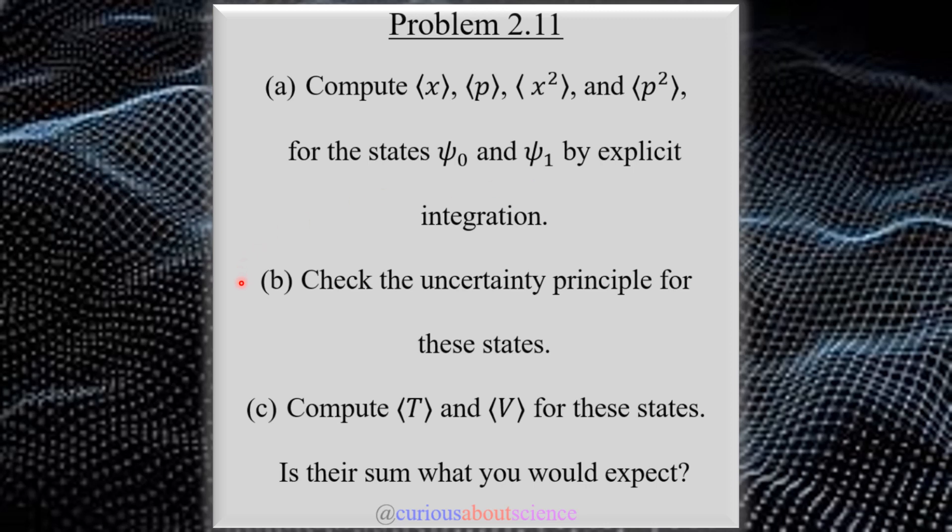Part B: check the uncertainty principle for these states. Makes sense, we already calculated the expectations. Let's find the standard deviation. And then part C, compute the expectation value of T and V for these states. Is there something you would expect? Here, the expectation of T is the expectation of kinetic energy, which we know we can write in terms of momentum. And V as well, you've seen that before.